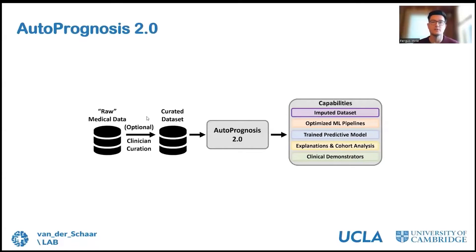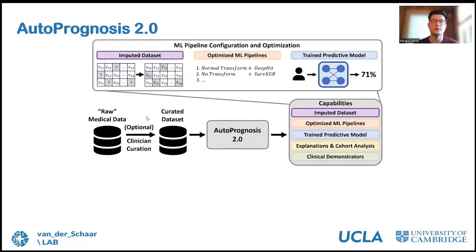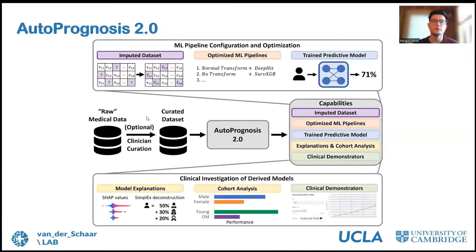The capabilities of AutoPrognosis can be grouped into two main components. First, using automated machine learning, AutoPrognosis imputes missing data and optimizes machine learning pipelines — determining not only which models are most appropriate for a given dataset but also tuning hyperparameters. AutoPrognosis then constructs a final predictive model as an ensemble of the best-performing pipelines. Crucially, it does more than just develop optimized models — it also allows investigation of derived models and allows models to be readily shared in an accessible format.